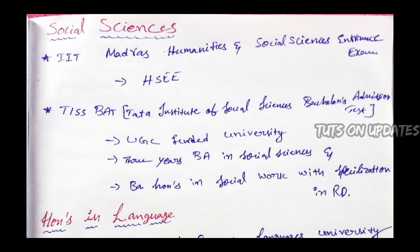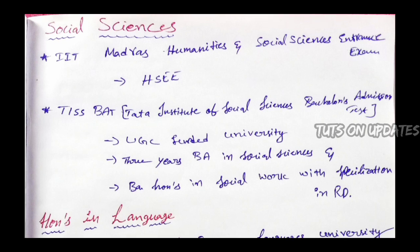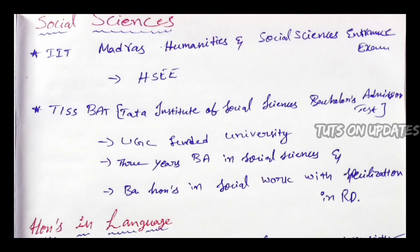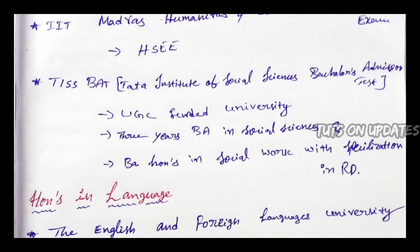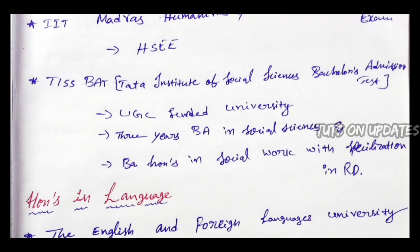Social Sciences, Medical, Pharmacy, Agriculture — at the state level — to complete a normal Social Sciences degree, there is the IIT Madras Humanities and Social Sciences Entrance Examination, HSEE. This exam is for admissions. Next, TISS — Tata Institute of Social Sciences — Bachelor's Admission Test. This is a UGC-funded university offering 3 years of BA in Social Sciences and BA honors in Social Work with Specialization in Rural Development.